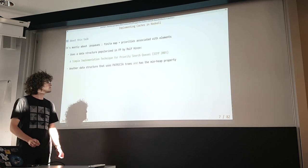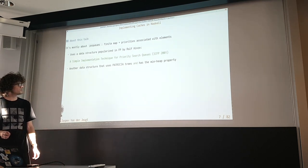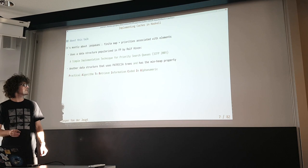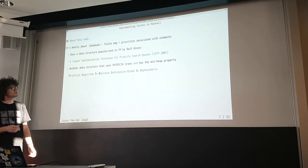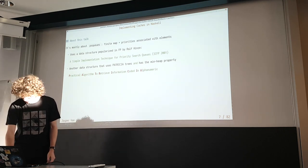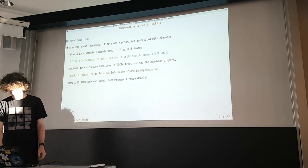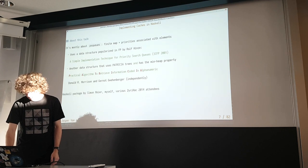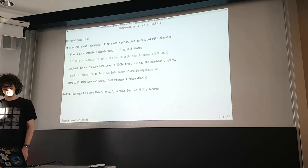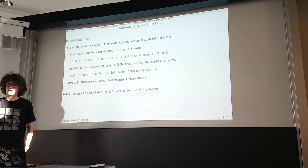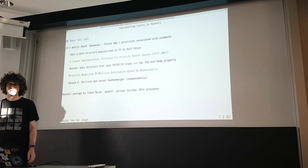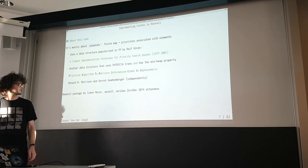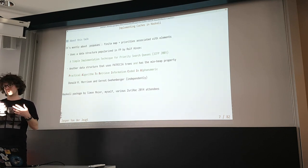The other data structure is a bit faster — it uses Patricia trees and a mini property. Patricia is not a woman's name; it stands for Practical Algorithm To Retrieve Information Coded in Alphanumeric. Donald R. Morrison was not only a great computer scientist but also a great acronym artist. The PSQs package was put together around five years ago during ZuriHac 2014. The initial idea came from Simon, especially for using Patricia trees, and we ended up publishing it a few weeks after.